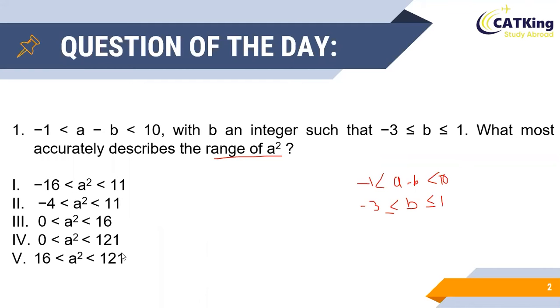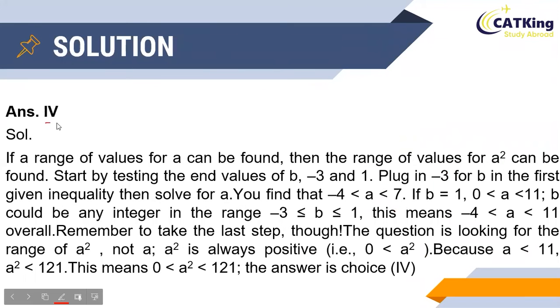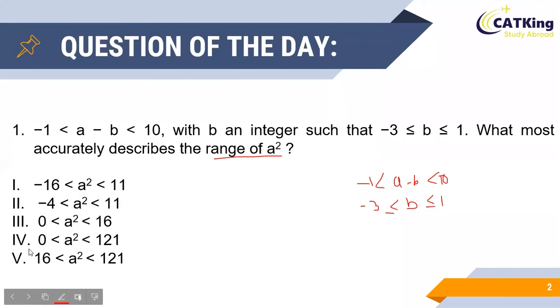Before we move on to the detailed solution, let us take a quick glance at the correct answer. As you can see, the correct answer is option 4, that is a square takes values between 0 and 121. Now let us see how we arrived at this particular answer.